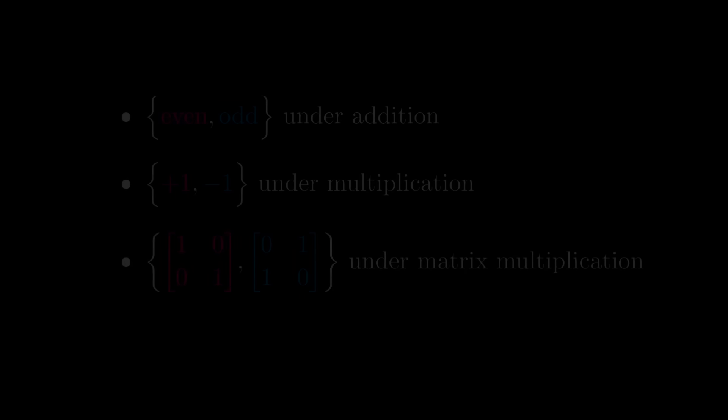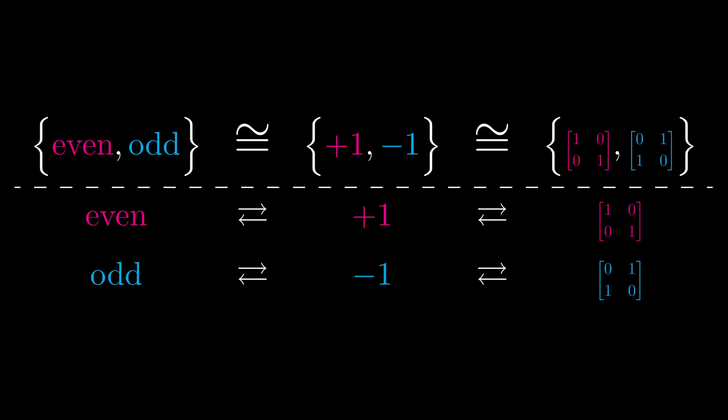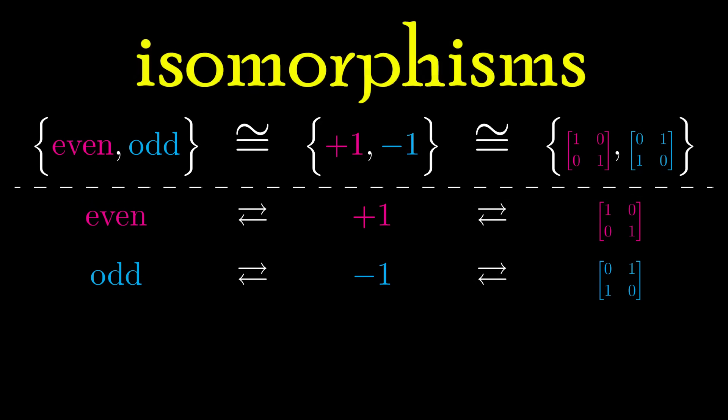How do we formalize that these three monoids are the same? Well, they're the same if we can come up with invertible, structure-preserving maps between them. Such maps are called isomorphisms. So, what we're really checking is that X and Y are isomorphic whenever their associated pre-sheaves are.